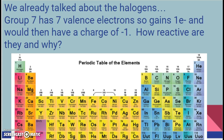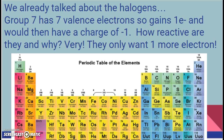So how reactive are our halogens and why? They are crazy reactive because they only need one more electron — they just need that one more.